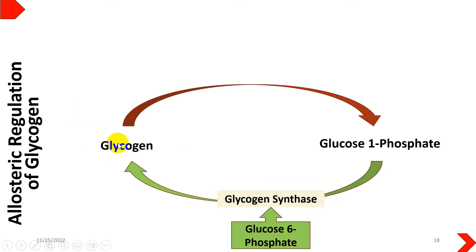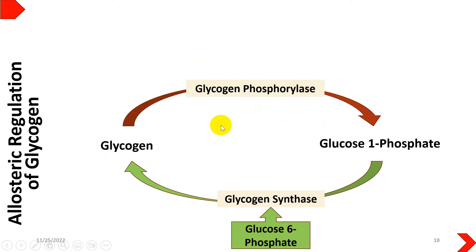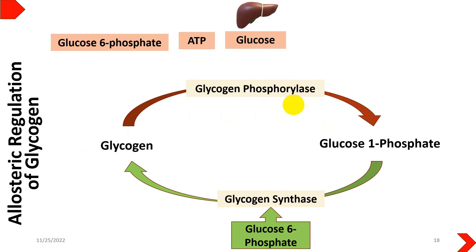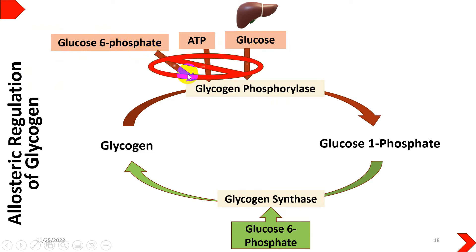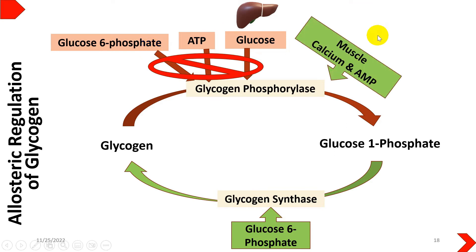Glycogen will be converted into glucose-1-phosphate with the help of glycogen phosphorylase enzyme, meaning glycogen phosphorylase enhances glycogenolysis. Glycogenolysis is allosterically regulated by glucose-6-phosphate, ATP, and glucose — all of which have a negative effect on glycogen phosphorylase. If there is increased ATP in the cell, increased glucose in the liver, or increased glucose-6-phosphate, it will never initiate glycogenolysis because these contents are already present in high concentration in the cells.